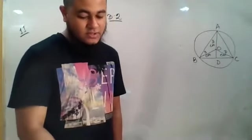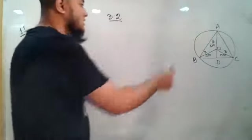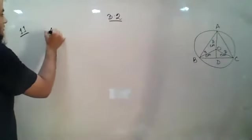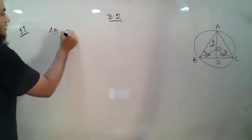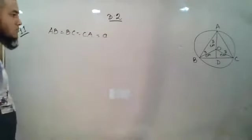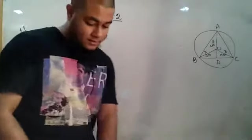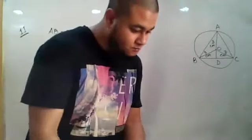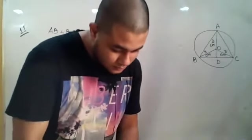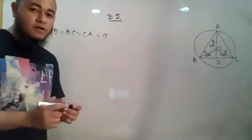The radius is 3 centimeters. Now we have to find the length of the side of the triangle — that means we have to find AB, BC, and CA. Let us consider the three sides AB = BC = CA = a.